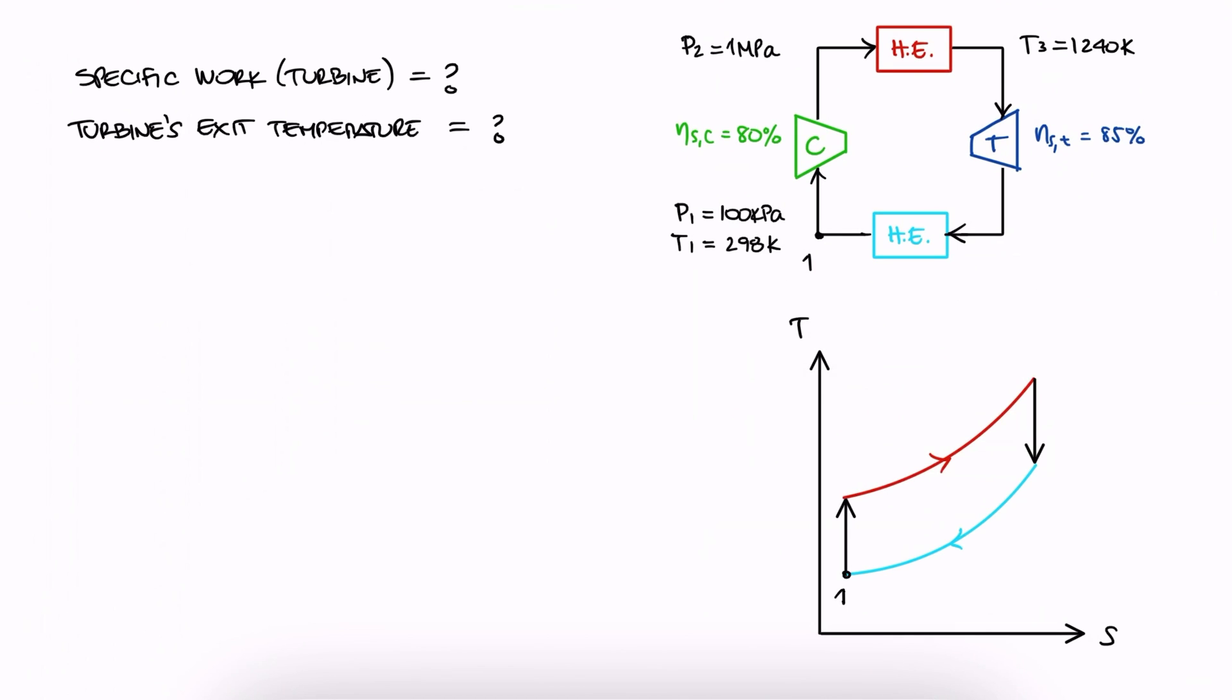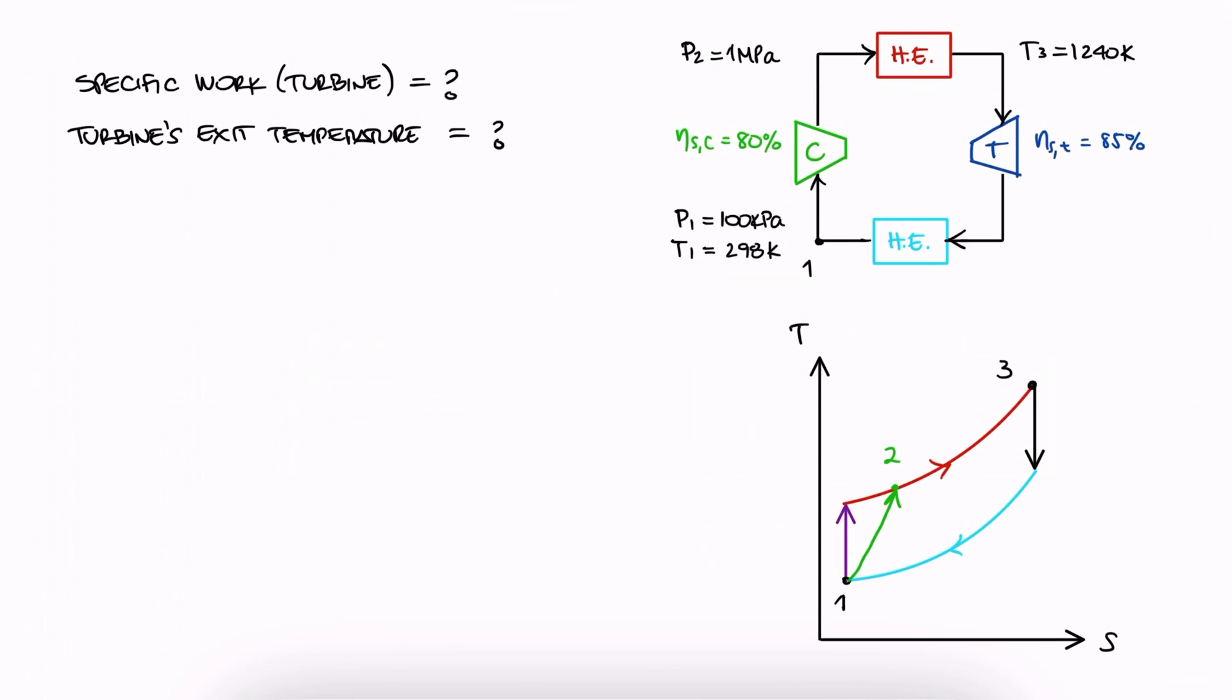Remember that in the real cycle, the real state 2 is just to the right of 2s, just as 4 is to the right of 4s.